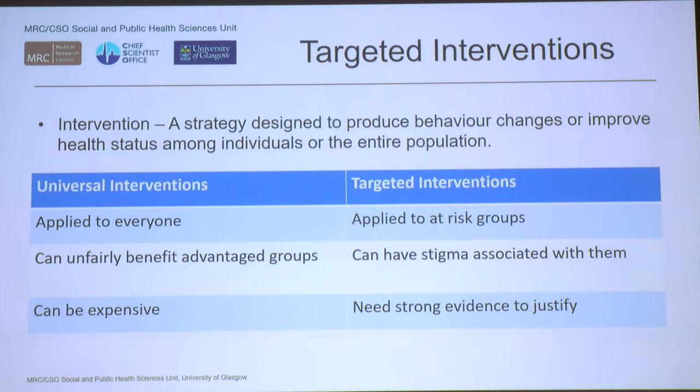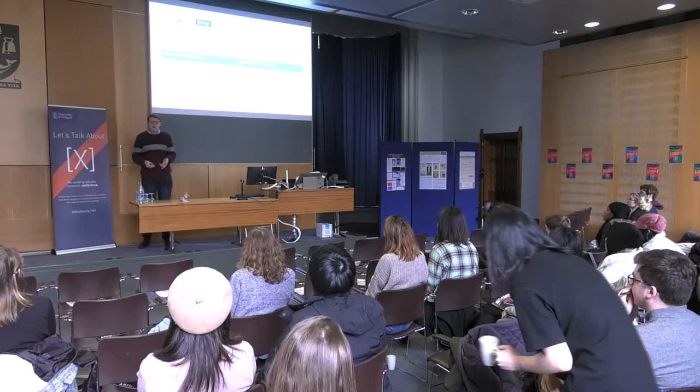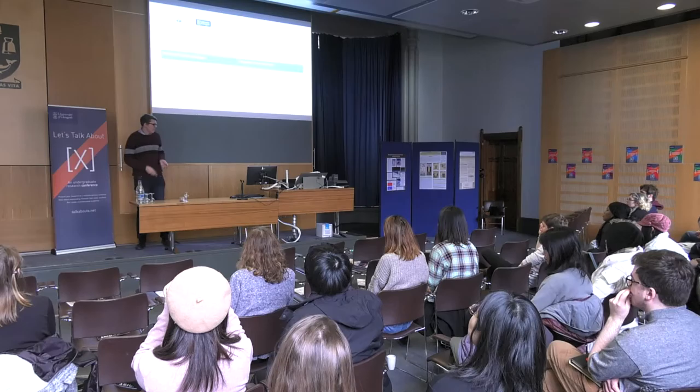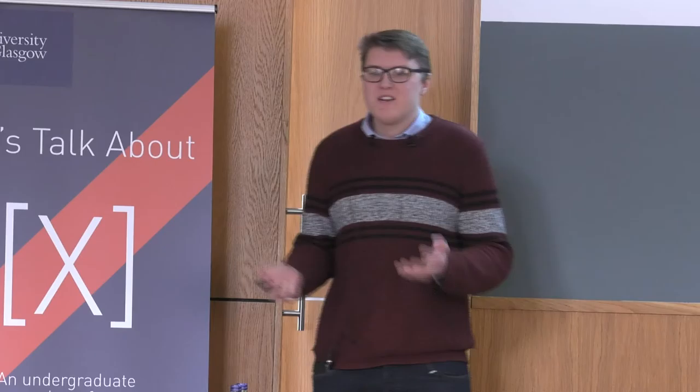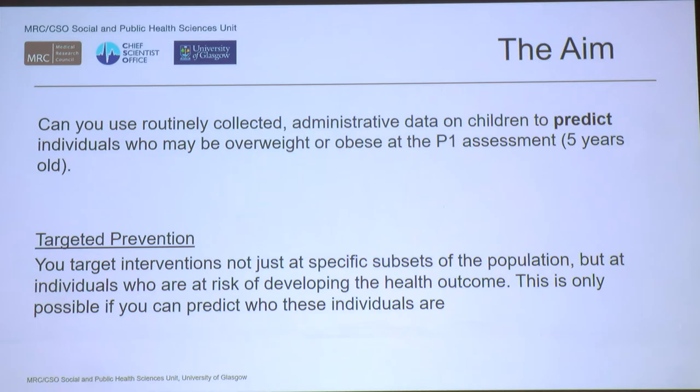That raises the question: what can be done? In health, we have the idea of an intervention — a strategy designed to produce behavior changes or improve health status among individuals or the population. With obesity, that can mean getting people moving or eating healthier. There are two types: universal interventions targeting everyone, or targeted interventions identifying a higher-risk subset to try and close those inequalities.